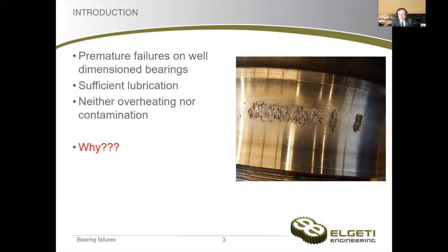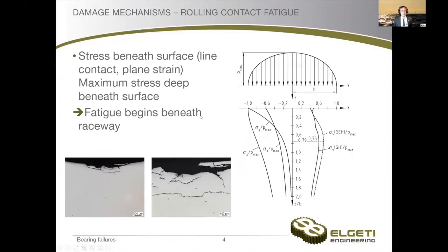So firstly, what is this topic on white etching crack failures about? Well, we face some bearings where we have premature failures and everything seems to be fine. The bearings are well dimensioned, we have sufficient lubrication, we have neither overheating nor contamination nor whatsoever that could possibly explain some premature failures, but still somehow suddenly we see raceway flaking, like in this case on the inner ring of a spherical roller bearing. And now the question is why — how is this possible?